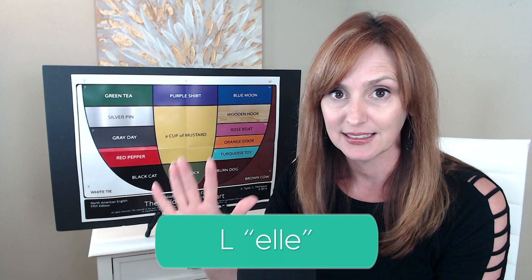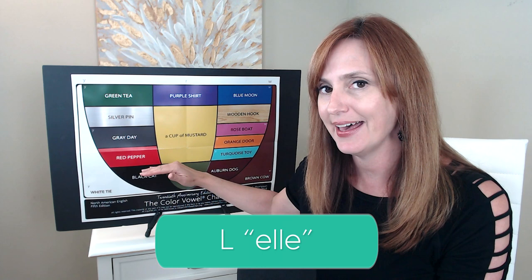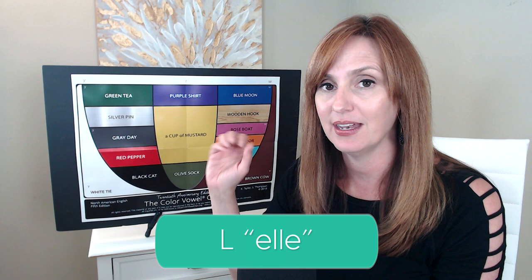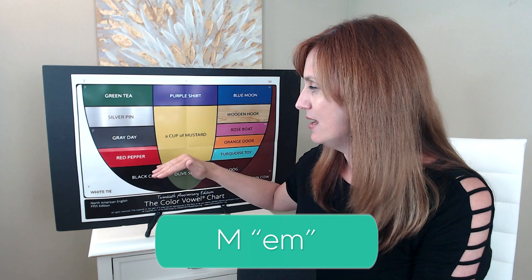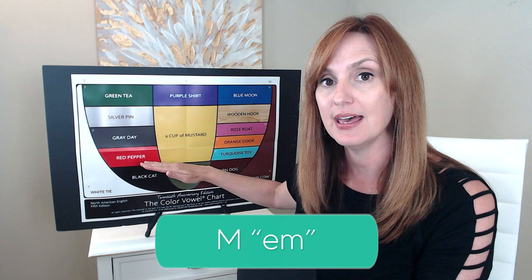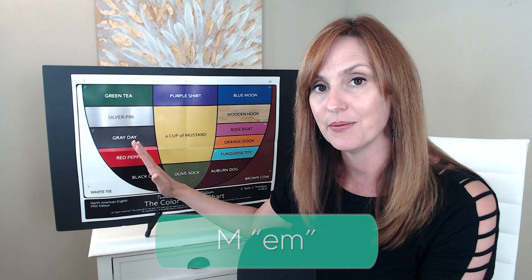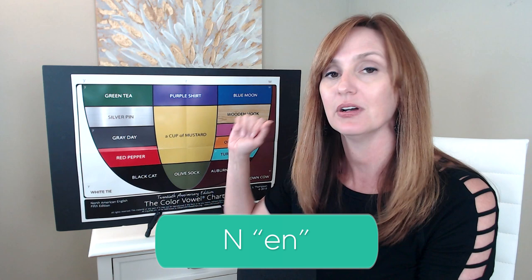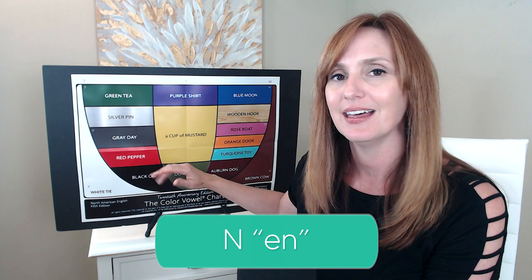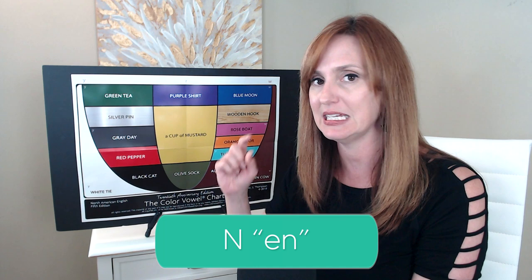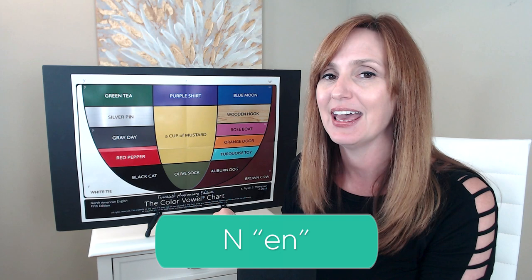L. Red pepper L. We begin with the red pepper E vowel and end with the L consonant. L. M. Red pepper M. Starting with that red pepper E vowel and moving into the M consonant — lips come together and air travels into the nose. N. Red pepper N. Again it's that red pepper E vowel, then moving into the N consonant — tip of the tongue pressed against the alveolar ridge, the bony bump right behind the top front teeth — and air travels into the nose for this nasal sound. N.